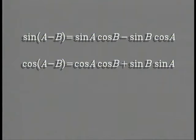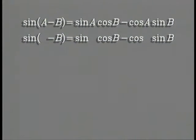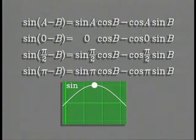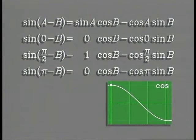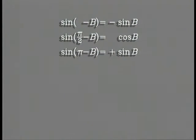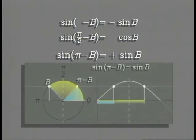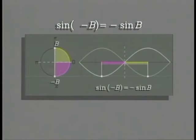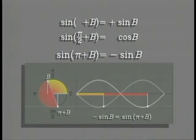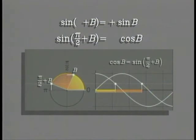The addition and subtraction formulas together provide a unifying source of properties that we've seen before. For example, if we make a equal to zero, pi over two, or pi, and recall the values of the sines and cosines of these special angles, we get the following properties: the sine of the supplement of b equals the sine of b; the sine of the complement of b is cosine b; the sine of negative b is the negative of sine b; the sine of pi plus b is the negative of sine b; and the sine of pi over two plus b is cosine b.